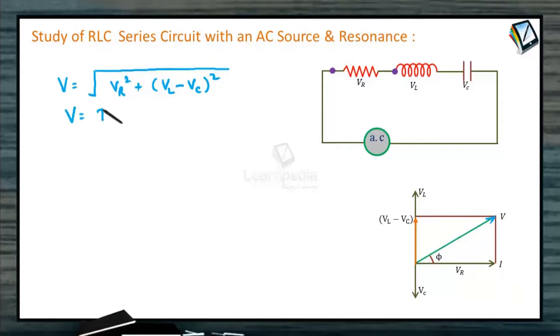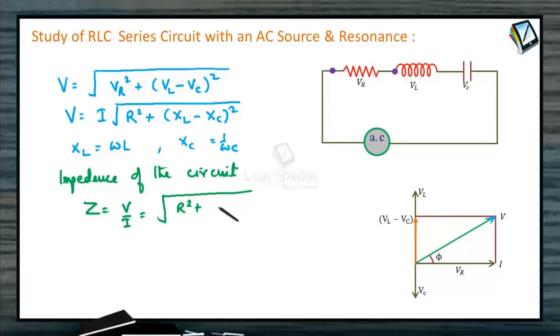So V can be written as I under root of, because VR can be written as IR square plus XL minus XC whole square. Inductive reactance minus the capacitive reactance. Where you know what is XL value? It is omega L. What is XC value? It is 1 by omega C. So V by I is nothing but Z or impedance. So we can also calculate impedance. Impedance of the circuit Z is equal to V by I and that is nothing but R square plus omega L, difference we have 1 by omega C whole square.